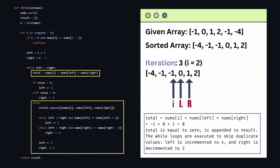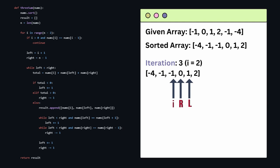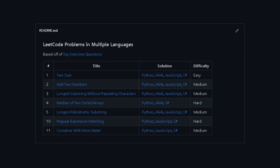Finally, in the last iteration, we also find out that it is equal to zero, so we append the result. The while loops are executed to skip duplicate values, the left is incremented to four, and the right is decremented to three. And that's the idea behind k-sum problems. Go star my GitHub.